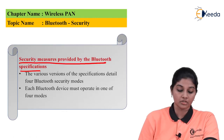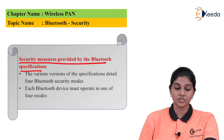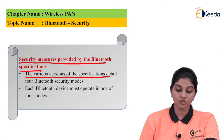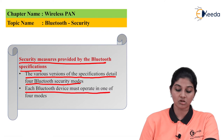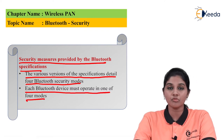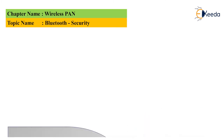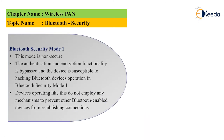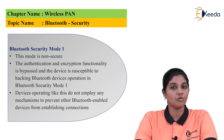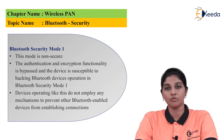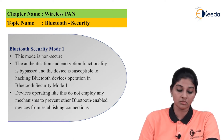The Bluetooth specification details security measures through various versions. Each Bluetooth device operates in one of four security modes, which are provided to prevent data loss.